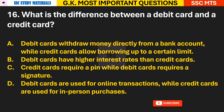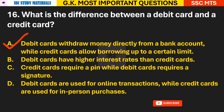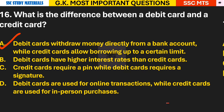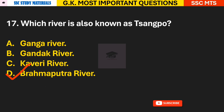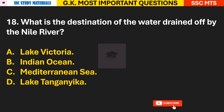Question 16: What is the difference between a debit card and a credit card? Answer A — debit cards withdraw money directly from a bank account, while credit cards allow borrowing up to a certain limit. Question 17: Which river is also known as Tsangpo? Answer D — the Brahmaputra river is also known as Tsangpo.